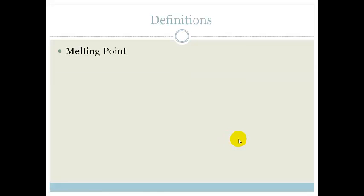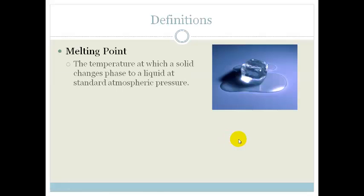Right, so let's look at our definitions. What is a melting point? The melting point is a temperature at which a solid, such as ice, changes phase to a liquid at standard atmospheric pressure. That's important because the pressure actually makes a difference as to which temperature this occurs at.